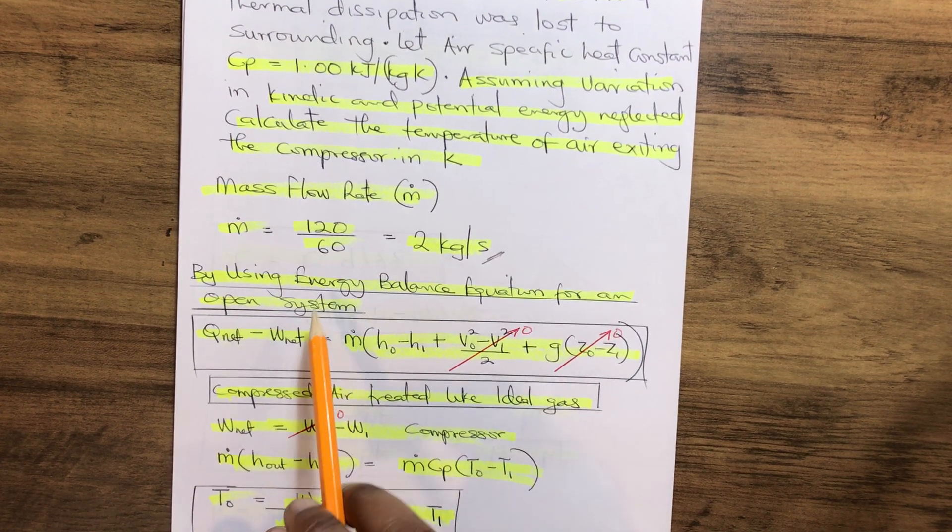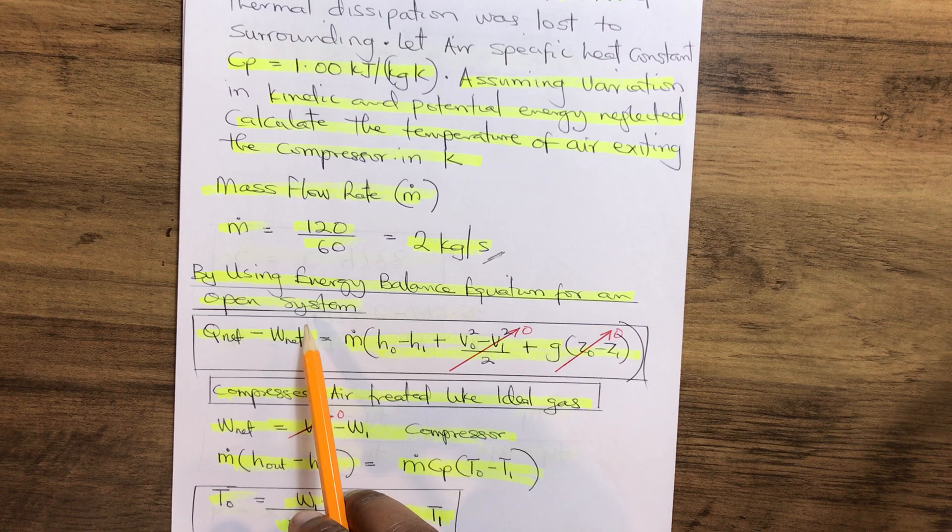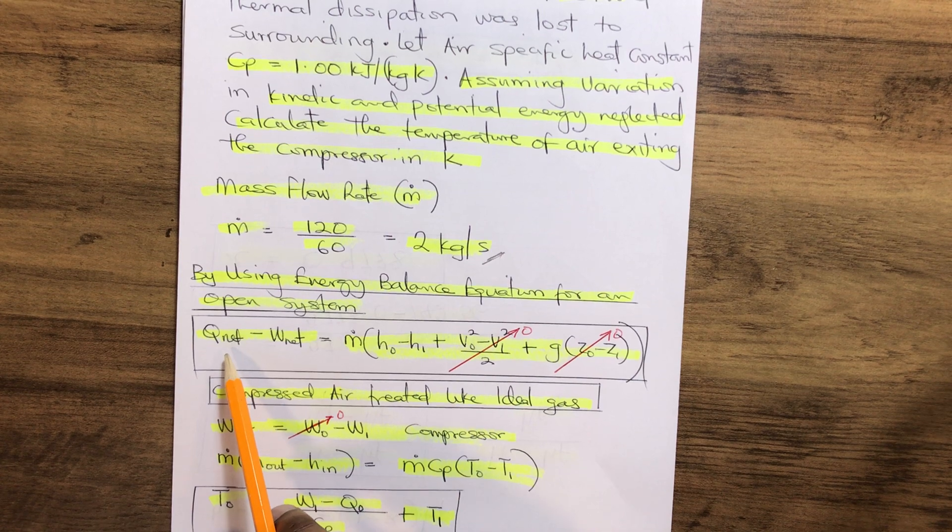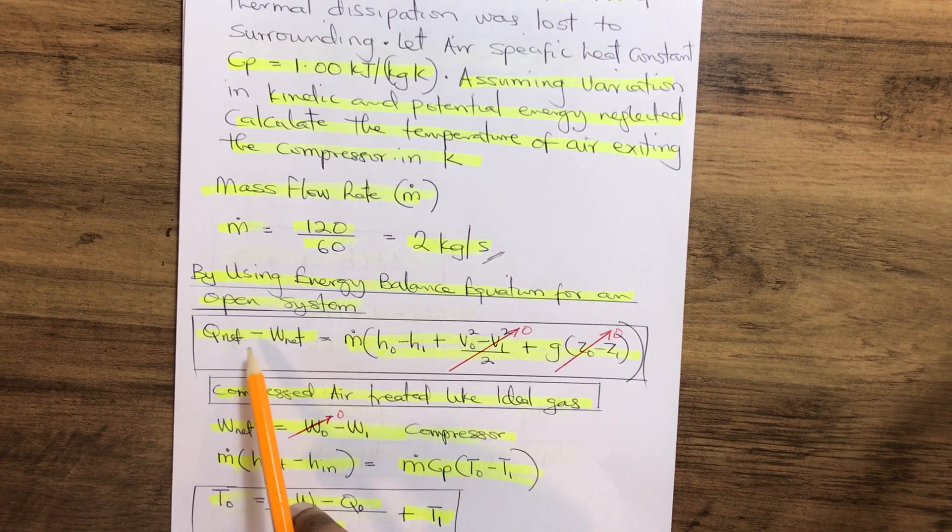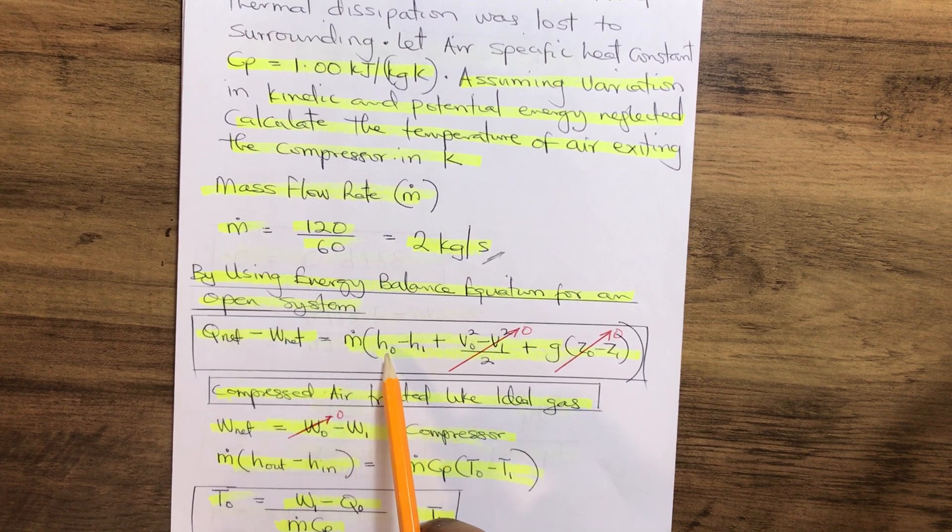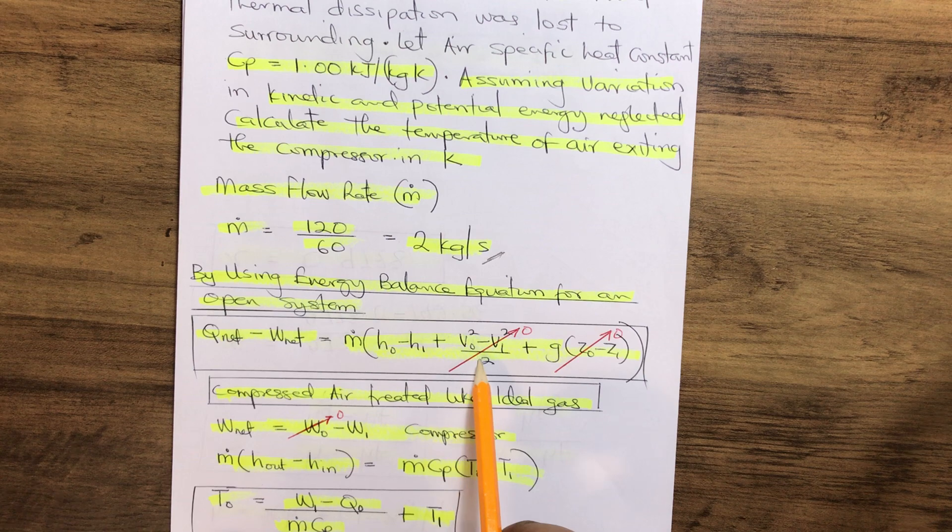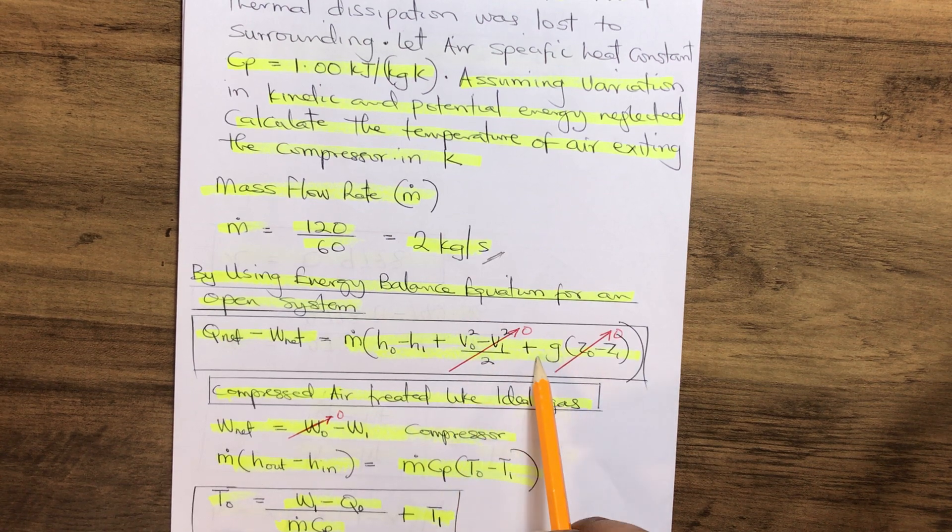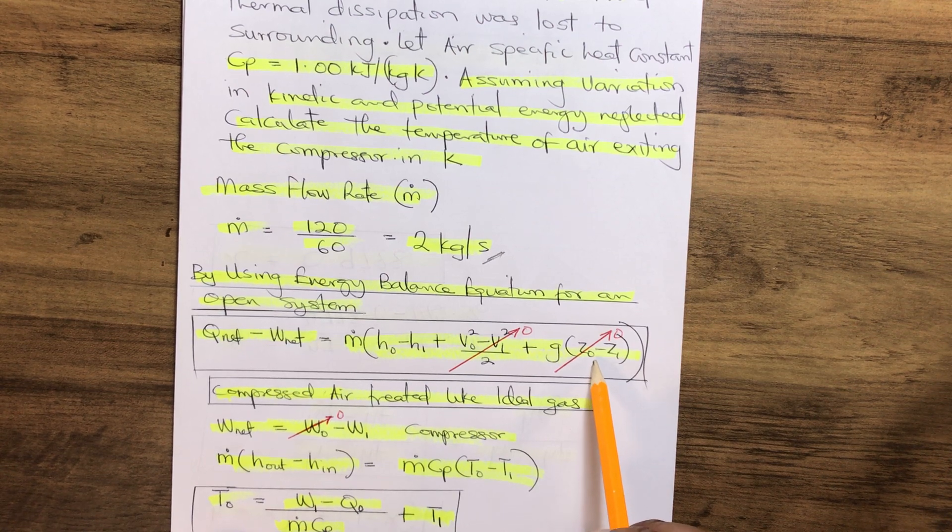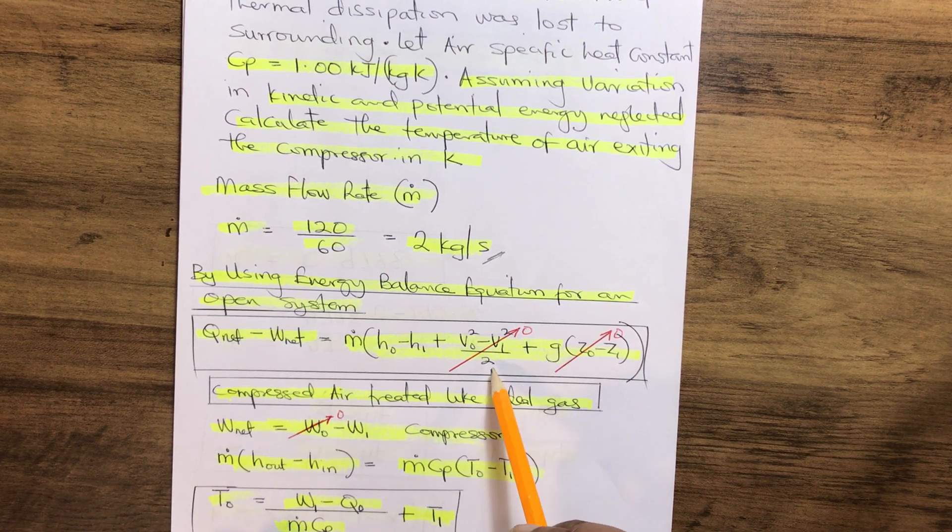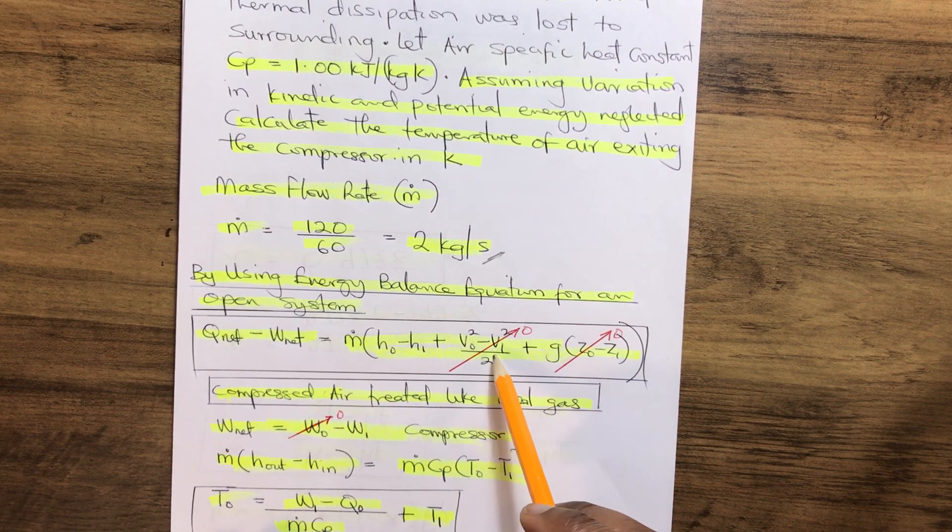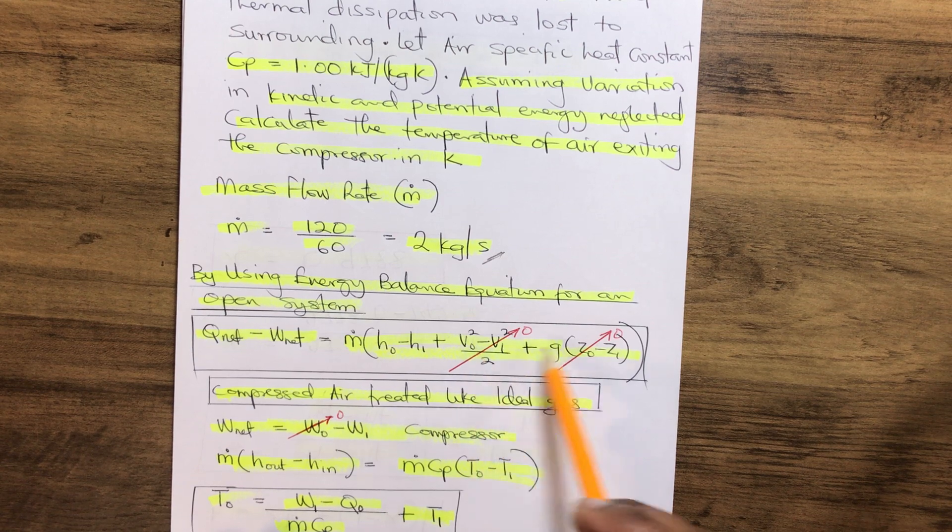Now by using the energy balance equation for an open system like a compressor, we have the following equation. The variation in the heat energy and the variation in the work net equals the mass flow rate multiplied by the variation of the enthalpy, plus variation of the kinetic, plus variation of the potential. Now we are assumed to nullify both kinetic and potential, so both of them tend to zero.